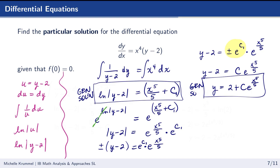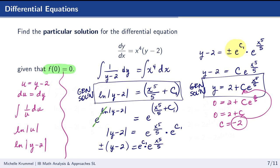To find the particular solution, substitute the condition f of 0 equals 0, meaning x equals 0 and y equals 0. So 0 equals 2 plus c times e to the 0, giving 0 equals 2 plus c, so c equals negative 2. The particular solution is y equals 2 minus 2e to the power x to the fifth over 5.